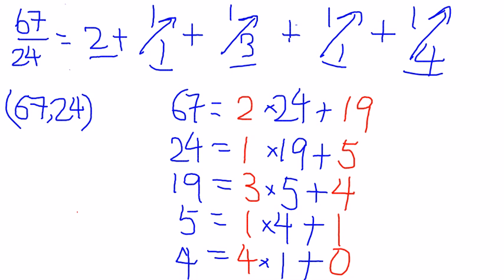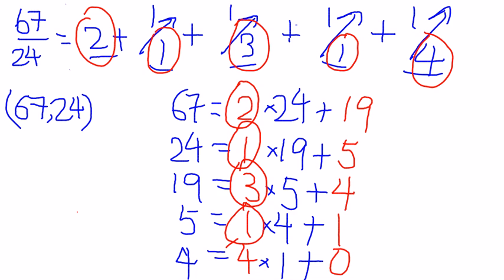So now, just do a simple check. Please check this pattern 2, 1, 3, 1, 4. It is exactly the same as the pattern we get for the Euclidean algorithm.